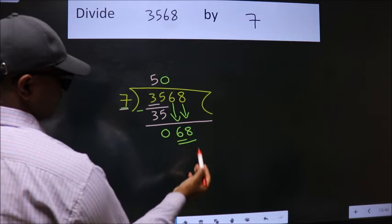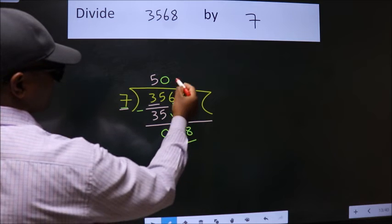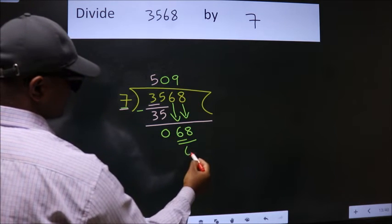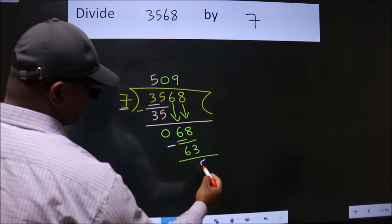So 68. A number close to 68 in 7 table is 7 nines 63. Now we subtract. We get 5.